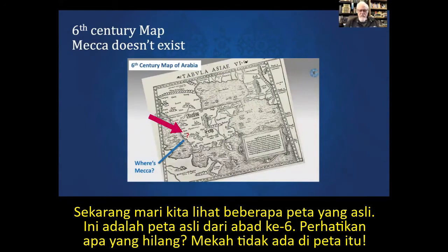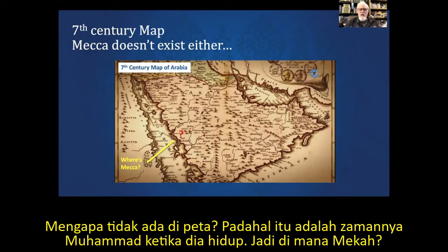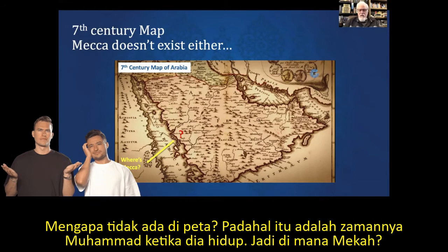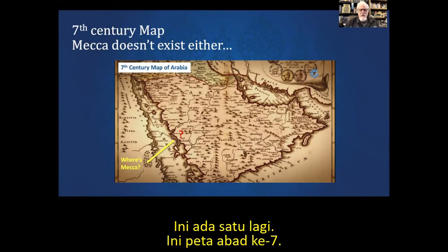Mecca is missing. Here is a seventh century map — look at what's missing. Where's Mecca? Not there. Where the red question mark is, is where Mecca is today. Why is it not on this map? This is the time of Muhammad — this is the time that Muhammad should be living.